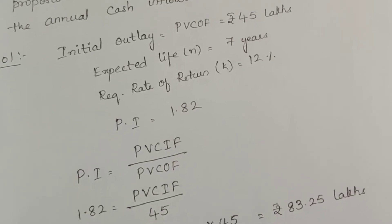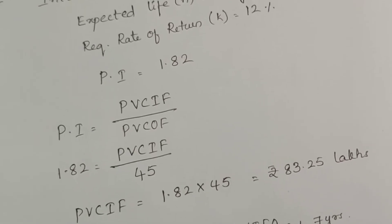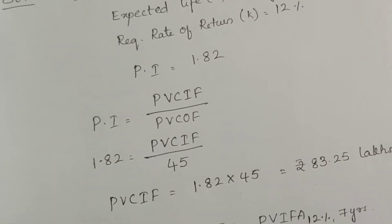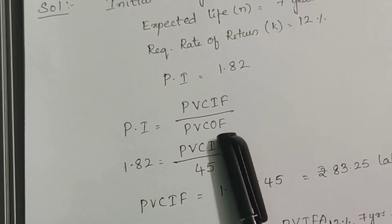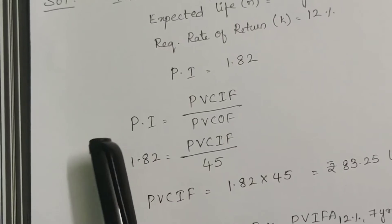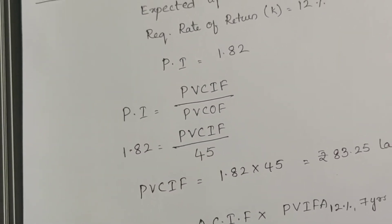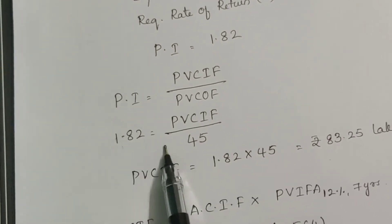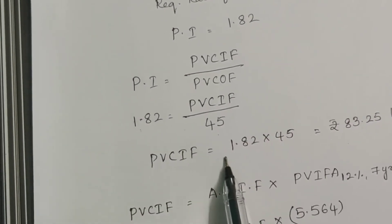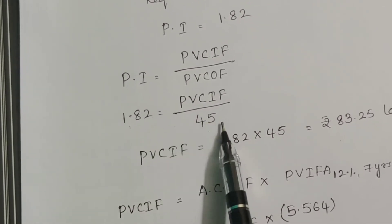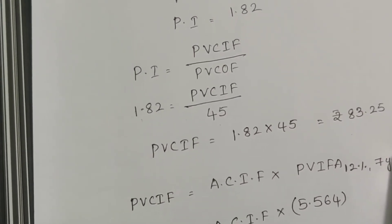Profitability index is given as 1.82. How do we calculate profitability index? Profitability index equals present value of cash inflows divided by present value of cash outflows. We have outflows and profitability index. So substituting the values, 1.82 equals present value of cash inflows by 45. Present value of cash inflows equals 1.82 into 45, which gives us 83.25 lakhs.